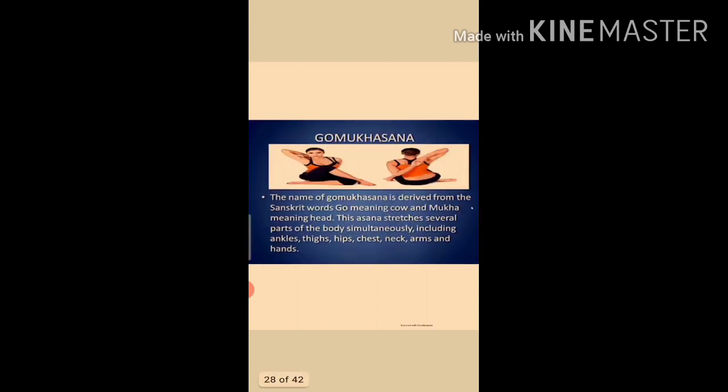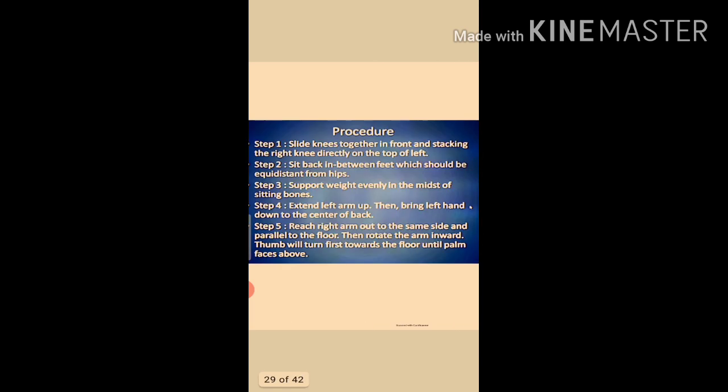Next is Gomukhasana. The name is derived from Sanskrit: 'go' means cow and 'mukha' means face or head. This asana stretches several parts of the body simultaneously, including the ankles, thighs, hips, chest, neck, arms, and hands. The body during the pose resembles a cow's face.